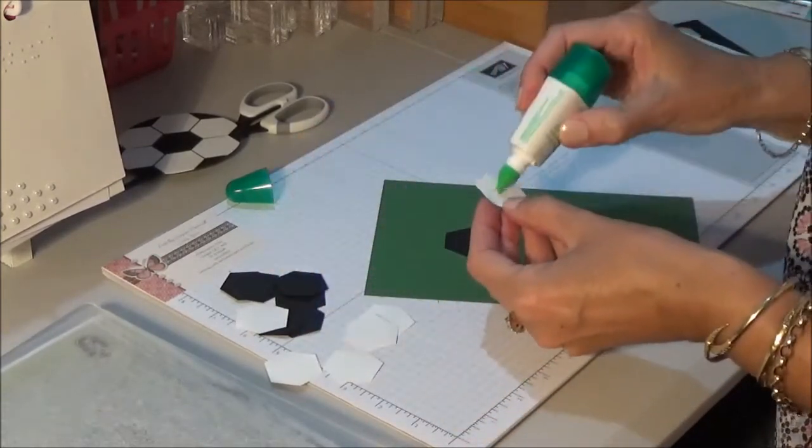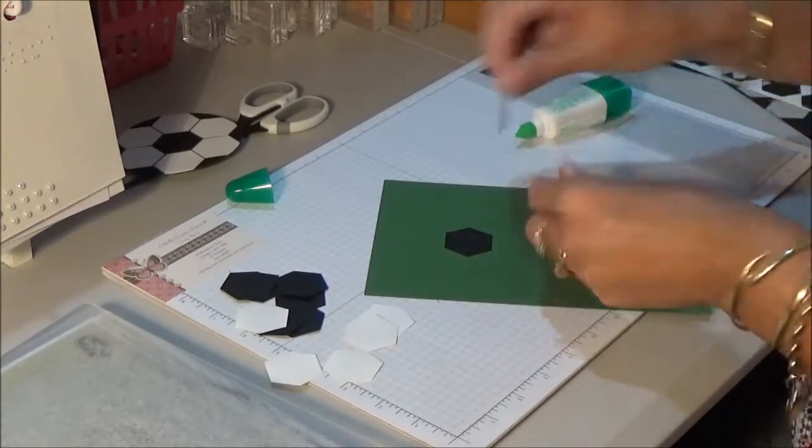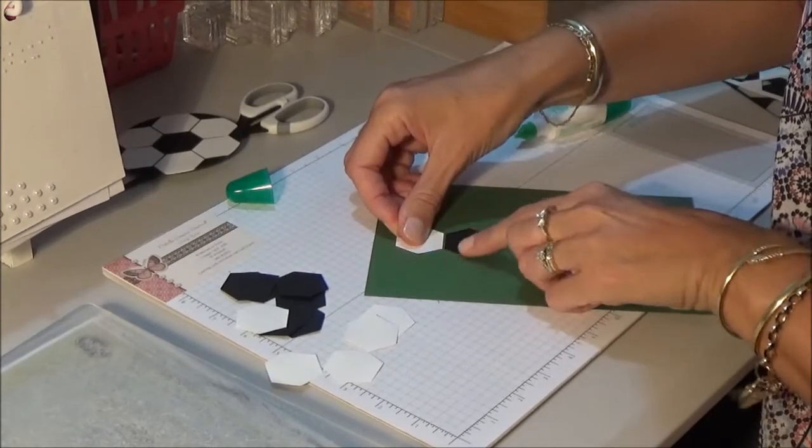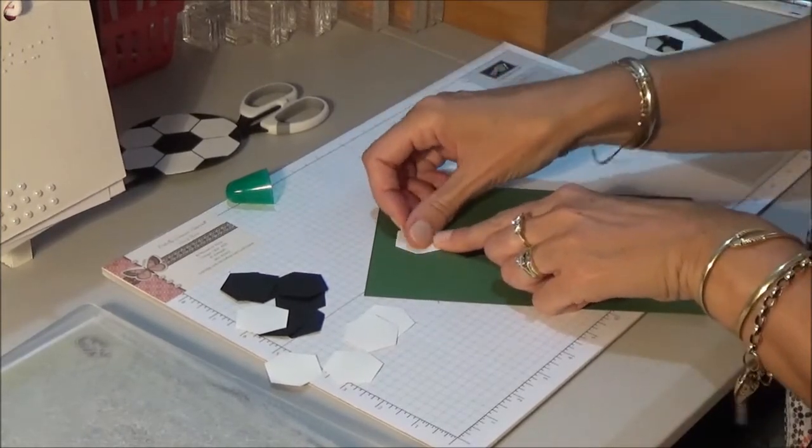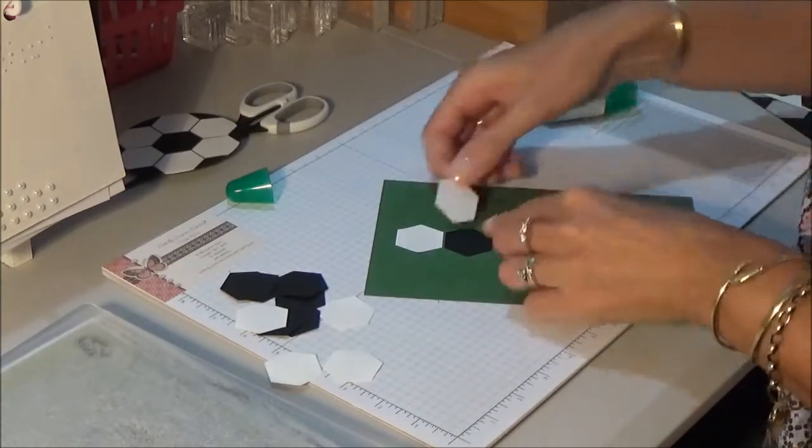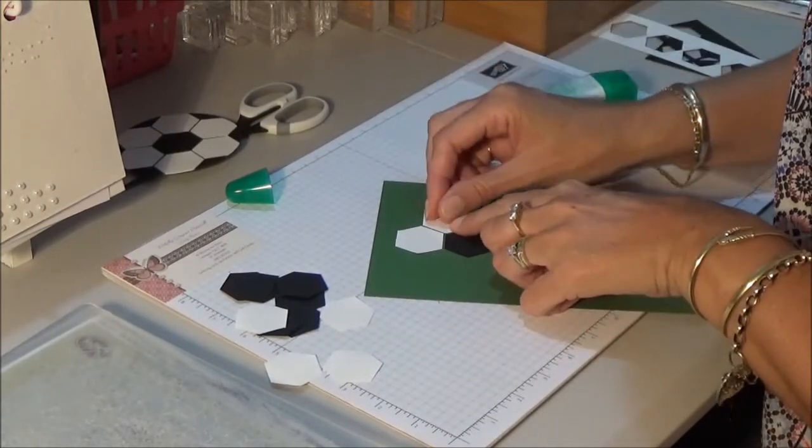Then all you're going to do is go around that one with the six white ones. Now when you glue them down, you want to make sure that you leave a small gap.